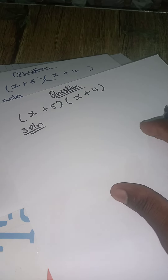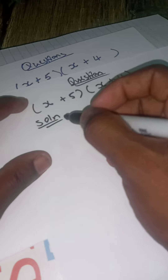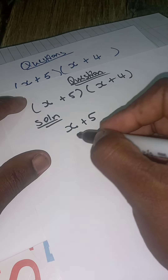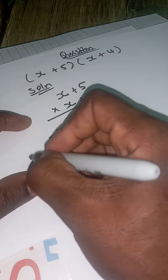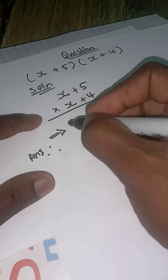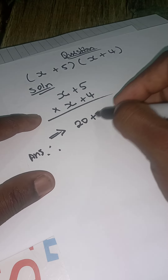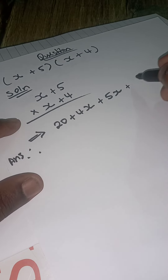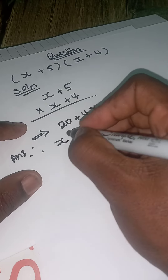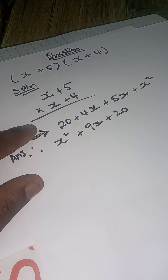Alright, let's use the multiplication method first. We have x plus 5 times x plus 4. So: 4 times 5 is 20, and 4 times x is 4x. Then x times 5 is 5x, and x times x is x squared. Simplify: x squared, and 4x plus 5x is 9x, plus 20. That is the answer for the multiplication method.